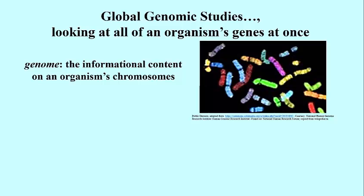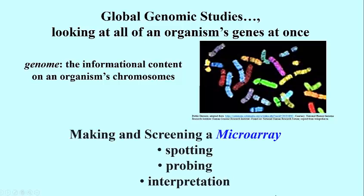Here's a picture of some chromosomes representing at least some of the DNA of a genome. To remind you, the genome is the informational or DNA content on an organism's chromosome. So how do we make and then screen a microarray? It consists of several steps after you get the DNA by doing DNA extractions from appropriate cells and then treating the DNA to get the fragments. At that point, you're ready to do spotting, followed by probing, and then of course the interpretation.